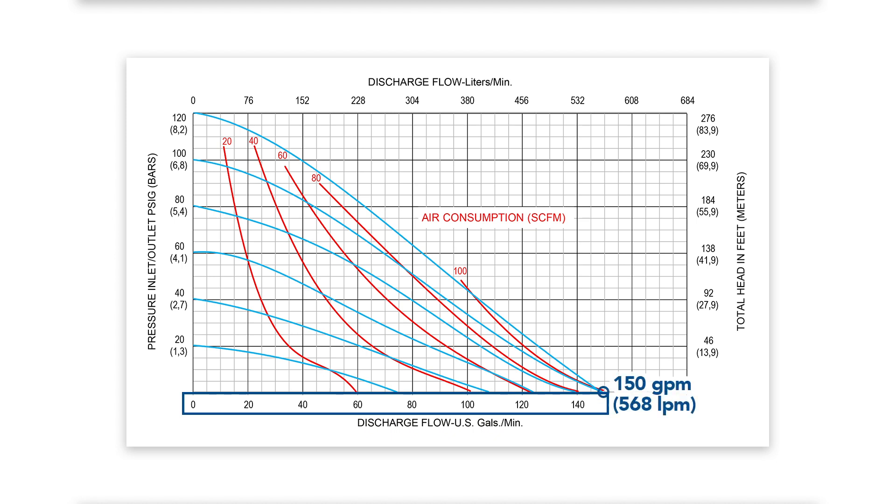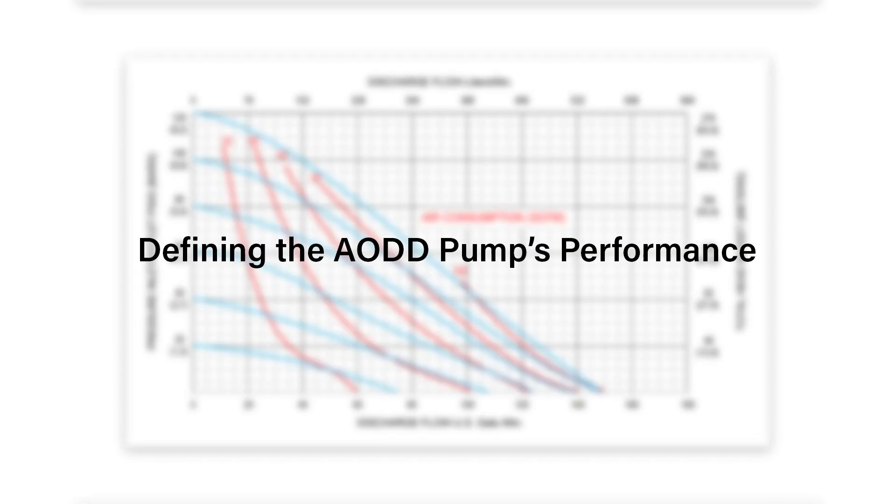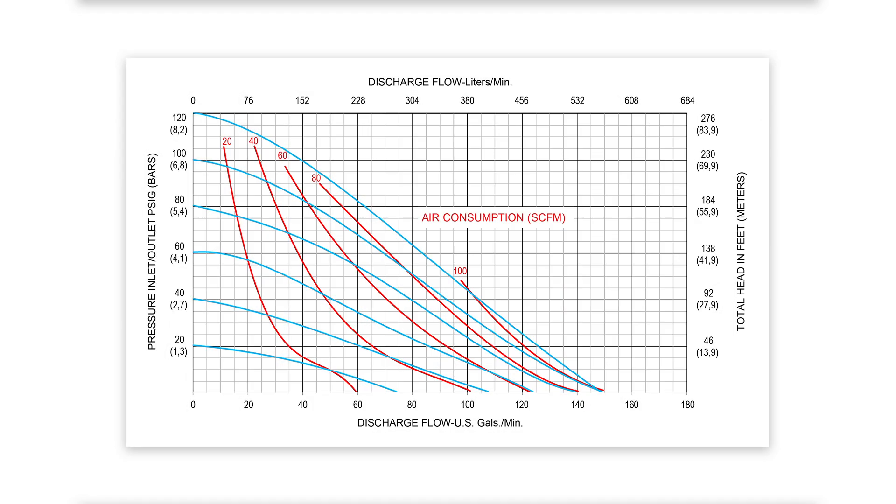The AODD pump performance curve defines the pump's performance based on a specific operating point, utilizing the required gallons per minute at a certain feet of head. For example, a manufacturing plant requires an AODD pump to be able to perform at pumping 50 gallons per minute at 115 feet of head.